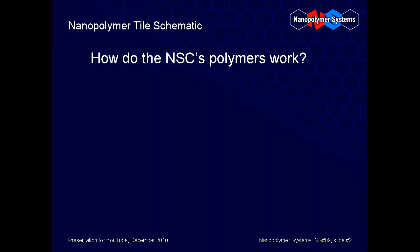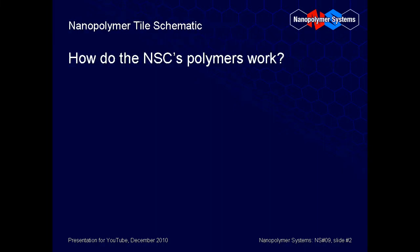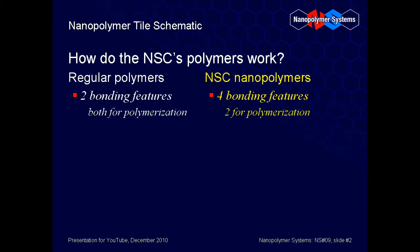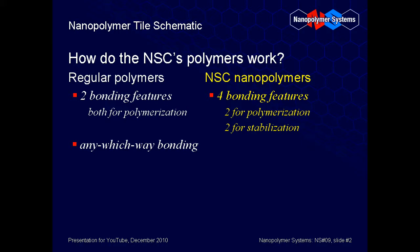Any discussion of the unique capabilities of NSC's nanopolymers should begin with a side-by-side comparison with regular polymers. Whereas regular polymers use two bonding features to make polymer linkages, NSC's polymers use four bonding features — two of which form a regular linkage, and the other two of which stabilize the linkage in its thermodynamically favored conformation. The any-which-way bonding of regular polymers is overridden by the extra bonding features to create one-way-only bonding in NSC polymers.